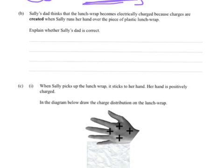B. Sally's dad thinks that the lunch wrap becomes electrically charged because charges are created. So that's important. That's why I've underlined it. When Sally runs her hand over the piece of plastic lunch wrap. Explain whether Sally's dad is correct.